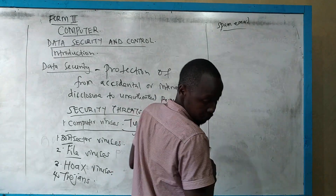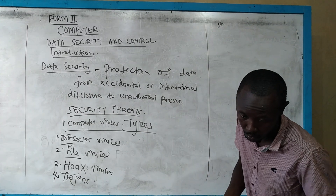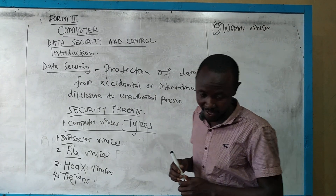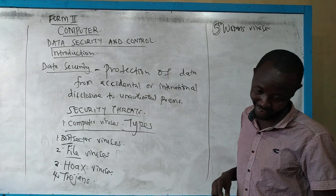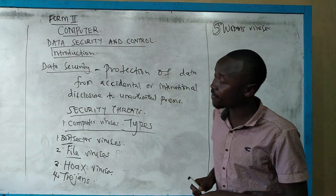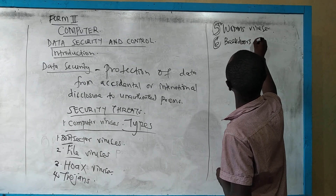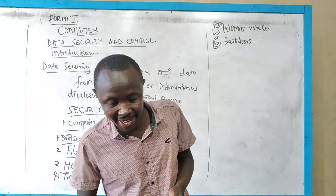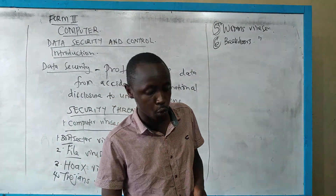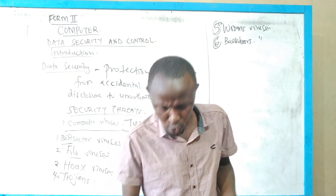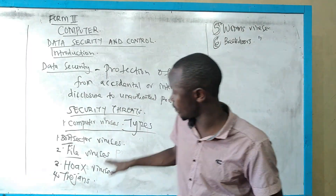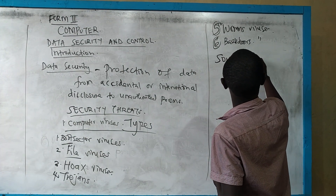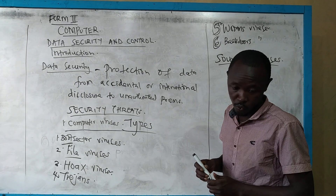We have the worms. Worm viruses reside in the computer memory — they affect the hard disk and the computer memory. And then we have backdoor viruses — backdoors or worms that allow hidden access to your computer, so these allow people to view what is in your computer. Sources of viruses: let us now see where these viruses are coming from.